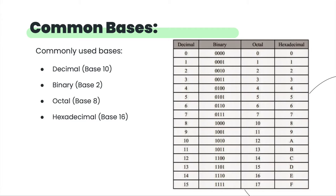We use hexadecimal because in computers we have bytes — one byte is eight bits of binary. When we want to output a lot of binary, it gets messy and convoluted. Since hexadecimal is a power-of-two number, we can reduce one byte to just two hexadecimal digits, which makes it much easier to read.